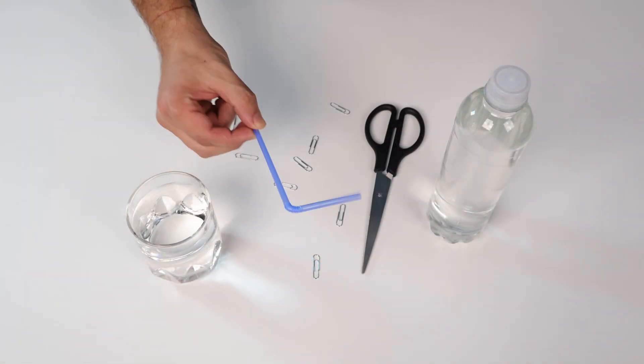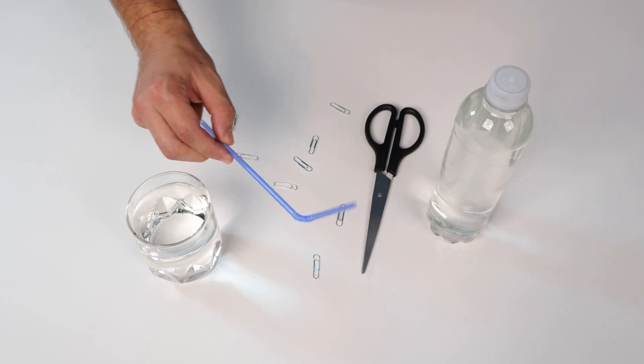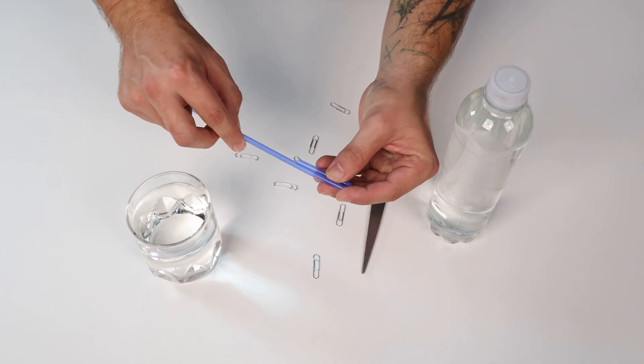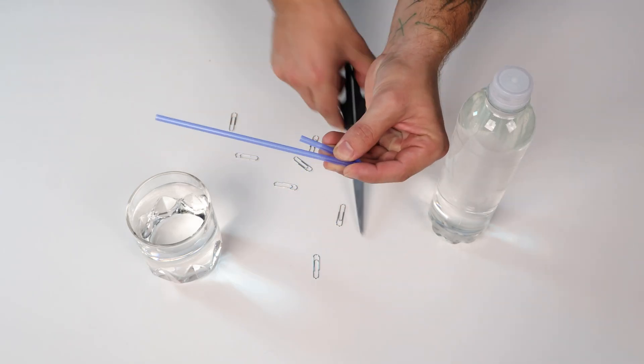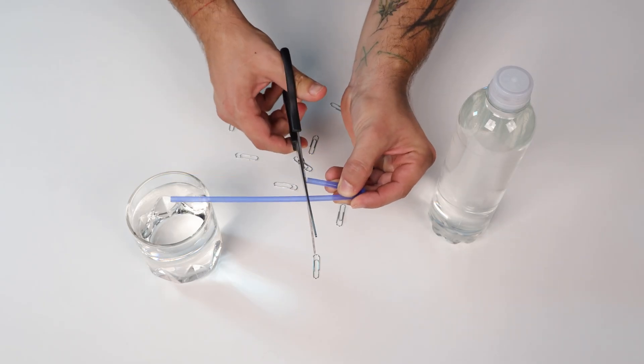Let's assemble this beauty. Take your plastic straw, bend it, look for the shorter part, take your scissors, and cut it to the length of the shorter part.